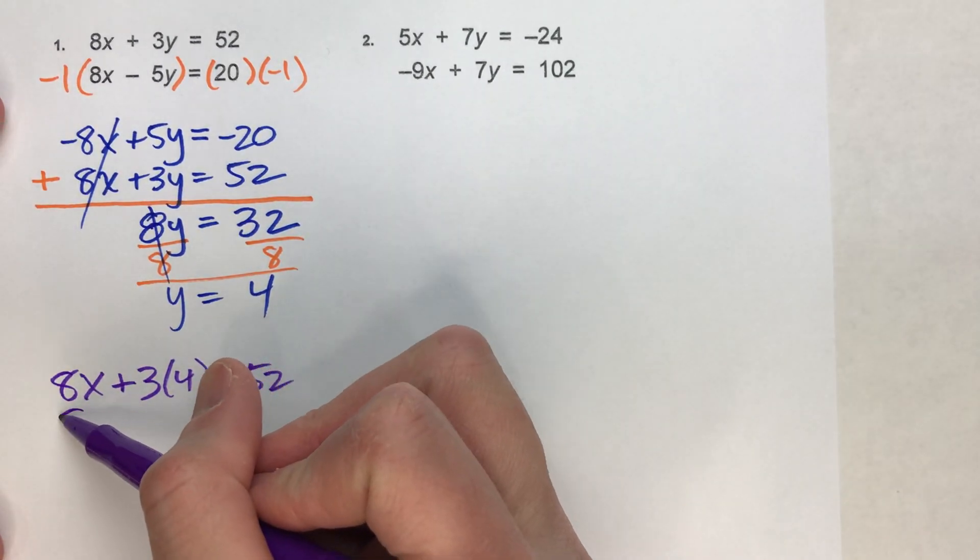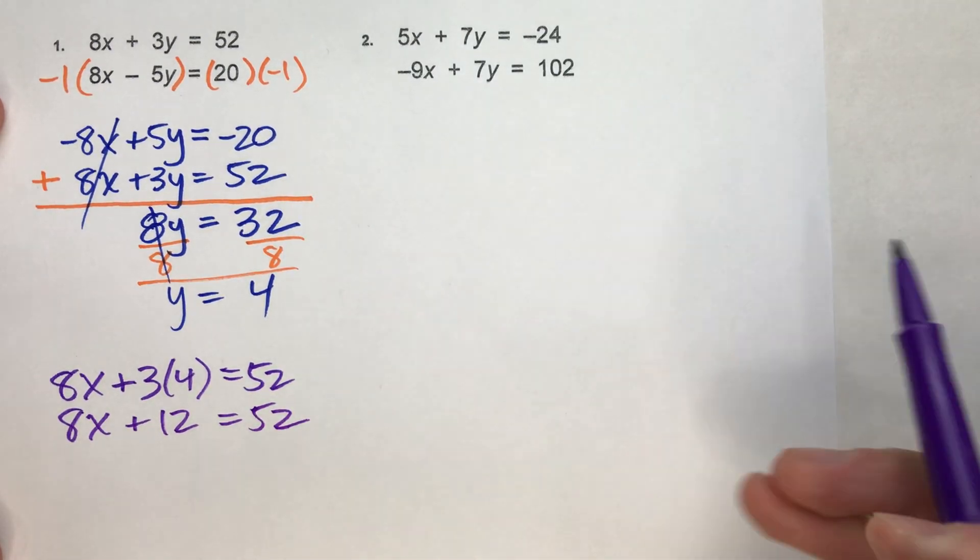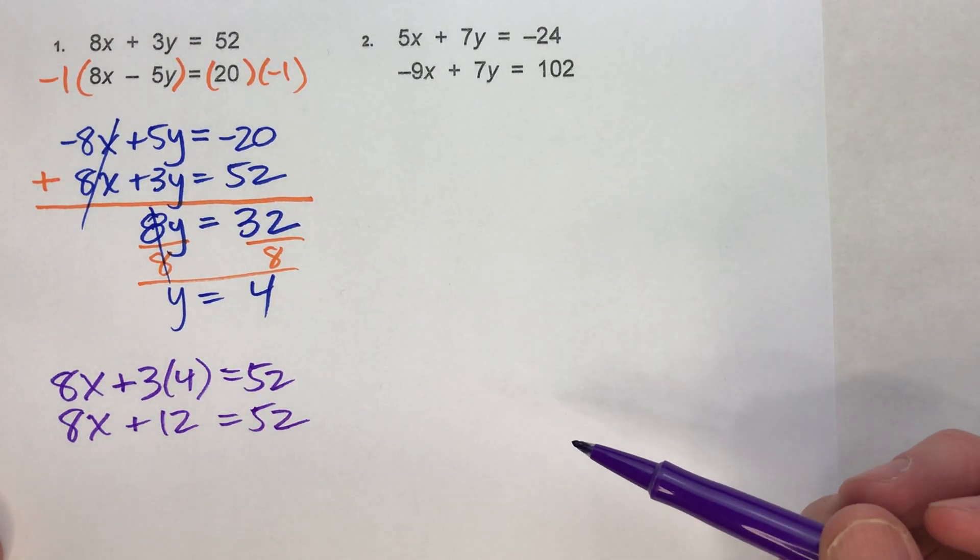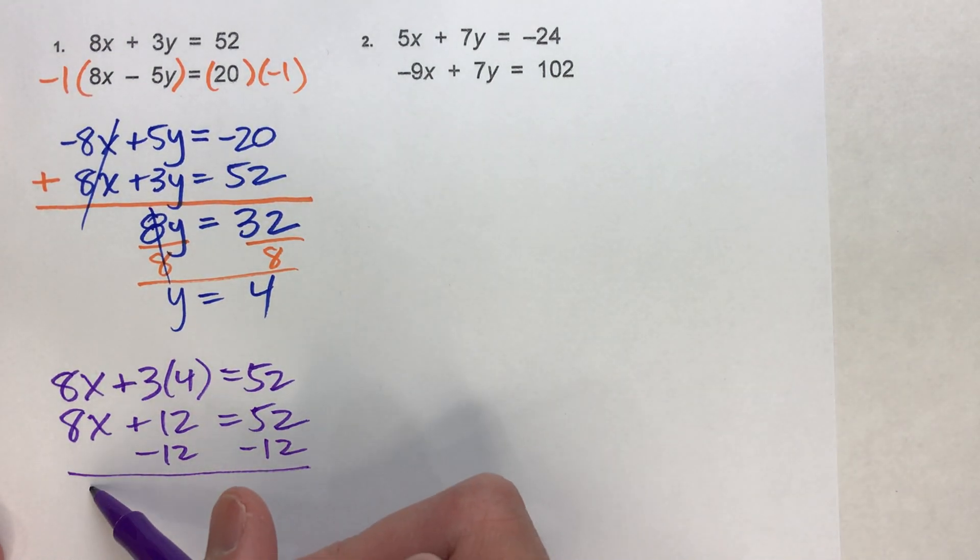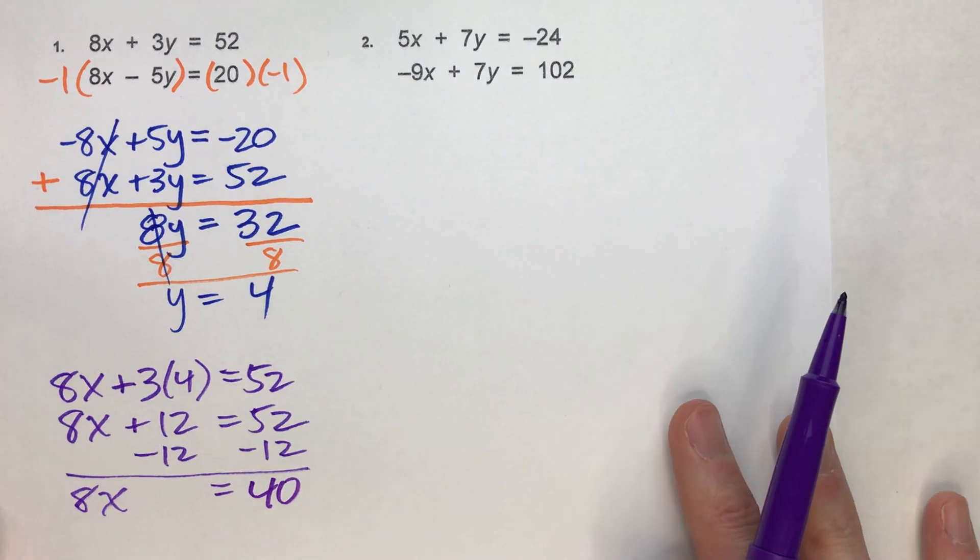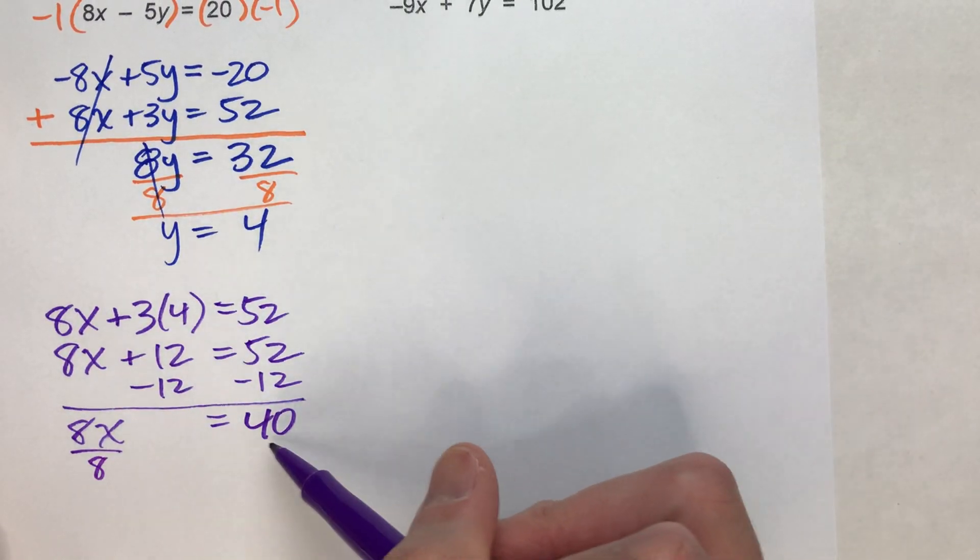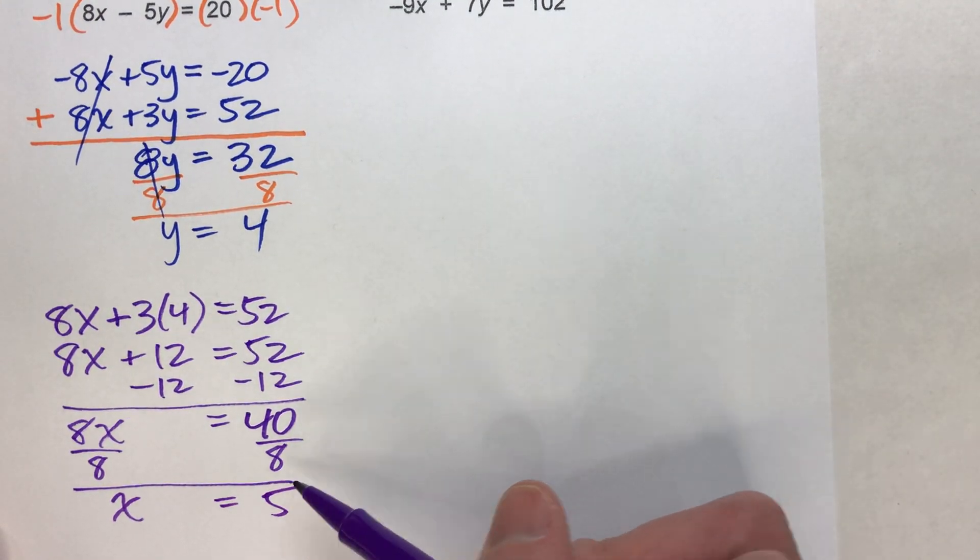So this gets me 8x + 12 = 52. And if I solve this little algebra equation, I'll get my x. Minus 12 on both sides. I end up getting 8x = 40. Divide both sides by 8. I end up getting x = 5.